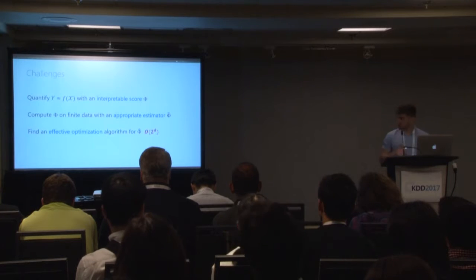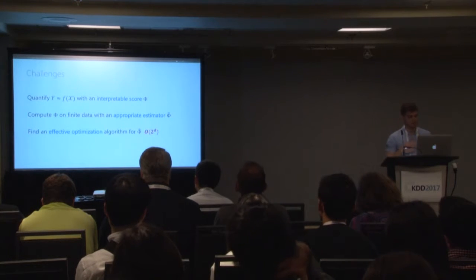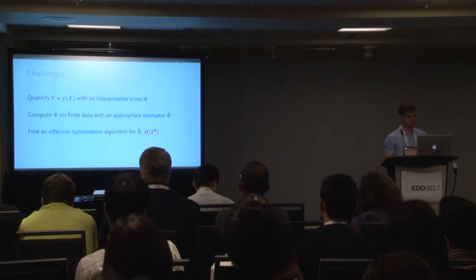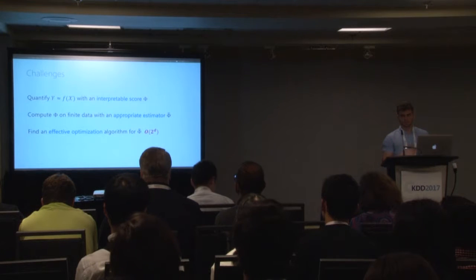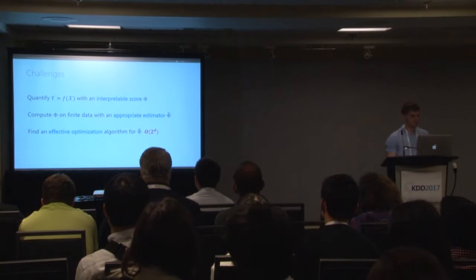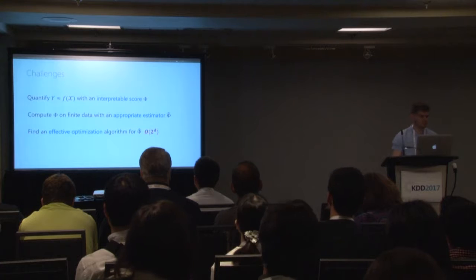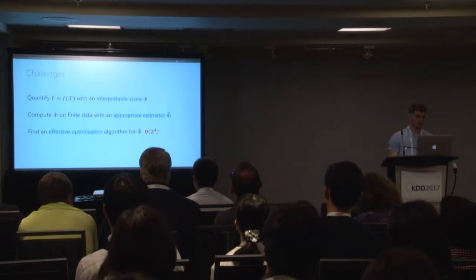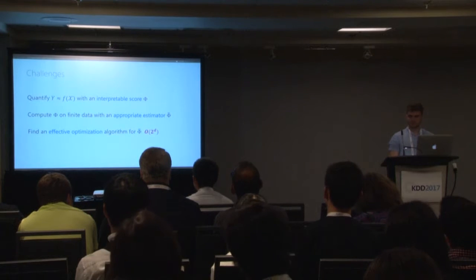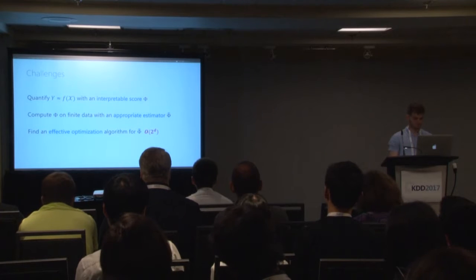The challenges we are facing: we want to find an interval score phi that quantifies this approximation. We want to compute phi on finite data and find an appropriate estimator phi-hat. And of course, we need an effective optimization algorithm for phi-hat because this is an exponentially large search space.